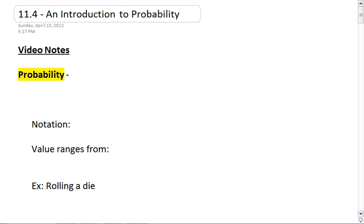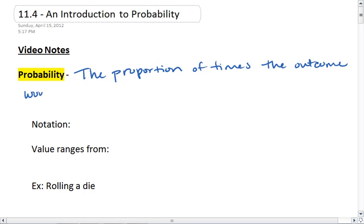A probability is the proportion of times the outcome would occur in a very long series of repetitions.